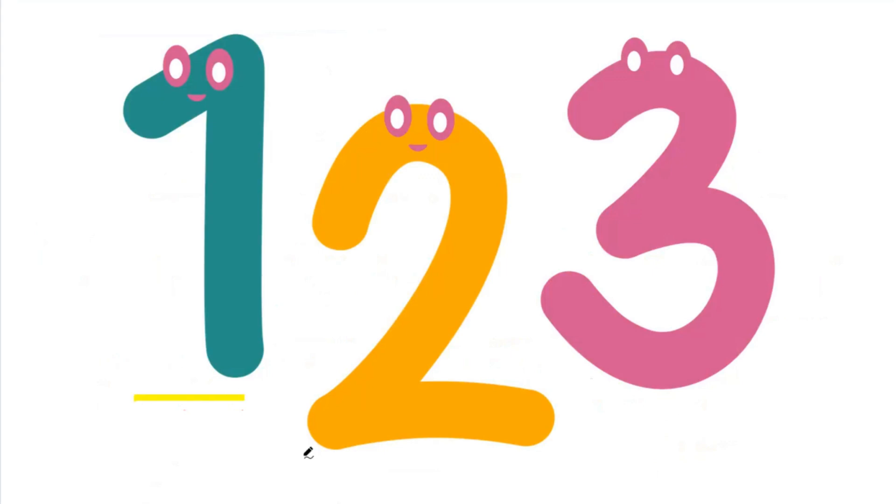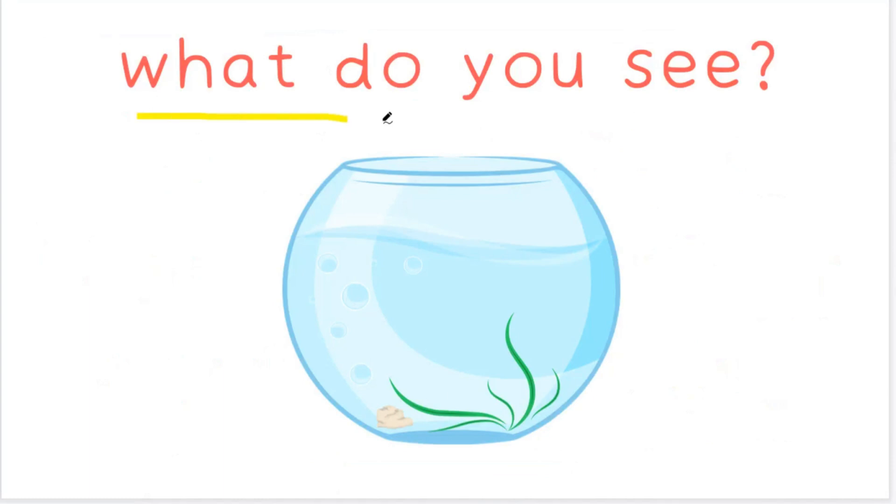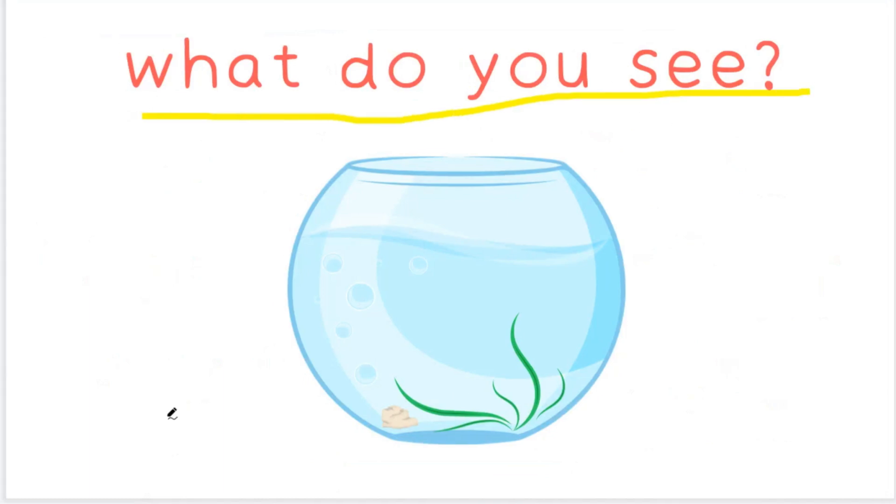1, 2, 3. What do you see? I can see a fishbowl, but I don't see any fish. What do you see? Great!